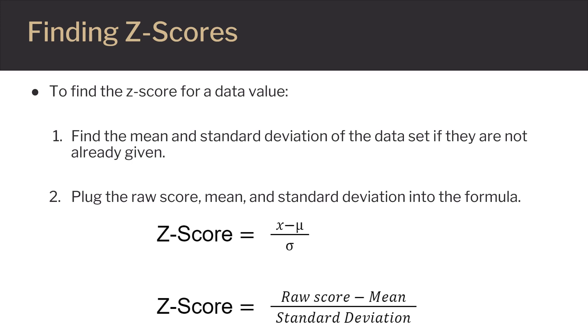If you are not familiar with the symbols, this would translate as Z-Score equals raw score minus mean, all divided by standard deviation.